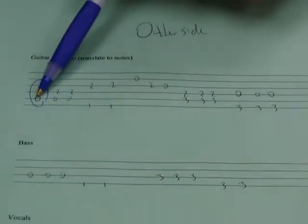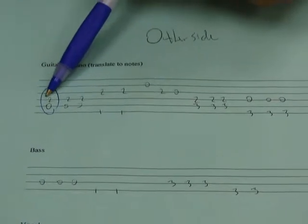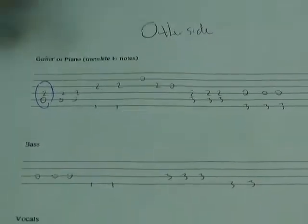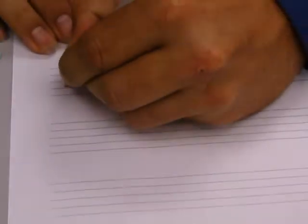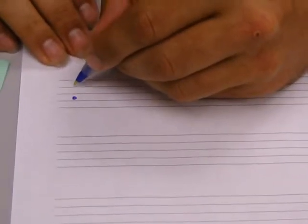But let's think about this. Which one is lower and which one is higher? The E is higher. So the E has to be written above the A. So I'll start with my A right here. My E has to be above it. So that's A, B, C, D, E.